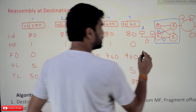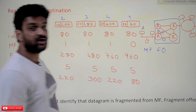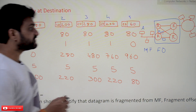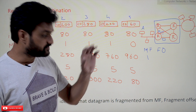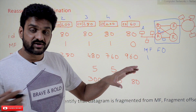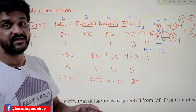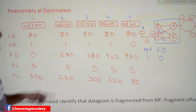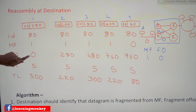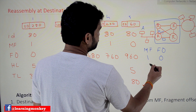What is the logic behind the fields MF and fragment offset? If the value of MF is equal to 1, it means that fragmentation has been done and there are more packets following. If the offset is zero along with MF equal to 1, it means that this is the first packet.